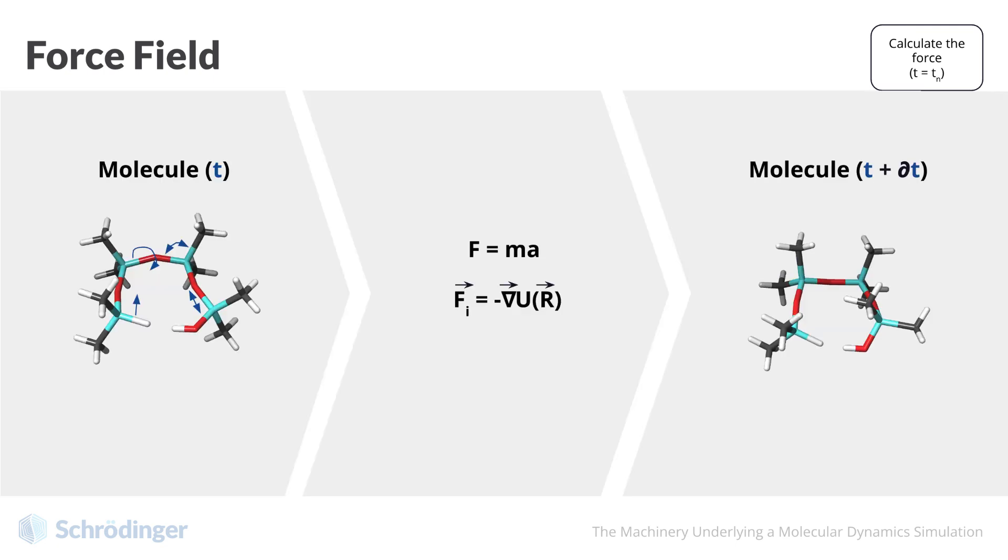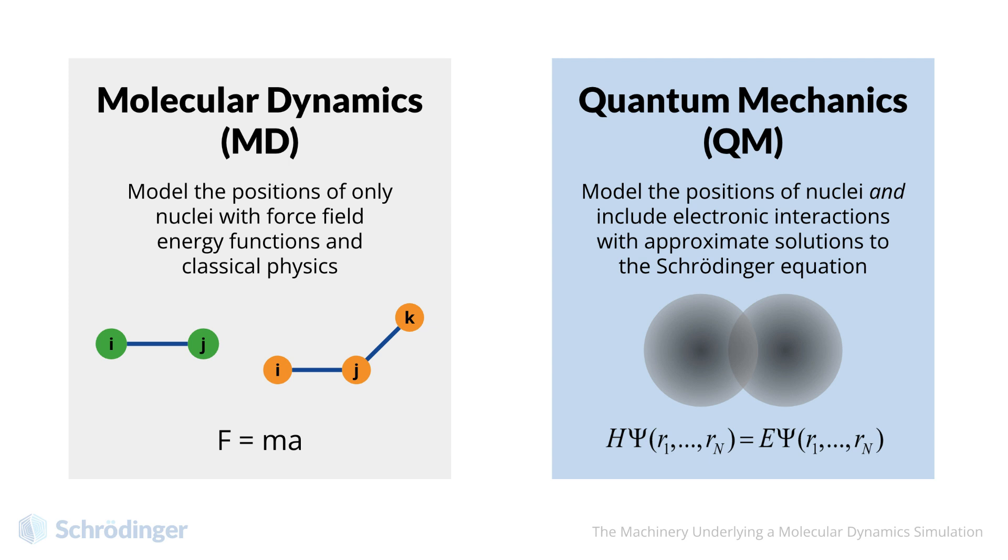The Desmond MD simulation takes the forces defined by the force field and determines what the acceleration will be on each atom through Newton's second law of motion. It is worth mentioning that the use of a force field and Newton's classical equations is the fundamental difference between molecular dynamics simulations and quantum mechanics calculations. In MD simulations, we model the positions of nuclei with force field energy functions, whereas in QM calculations, we model the positions of both electrons and nuclei with approximate solutions to the Schrodinger equation.